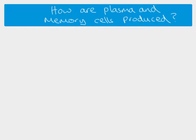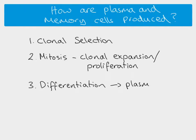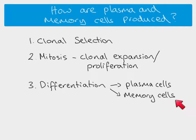In terms of how those cells are produced there are three stages. First we have clonal selection — the selection of a particular B cell. Then that selected cell undergoes mitosis, which we call clonal expansion or proliferation, meaning the selected cell multiplies many times to produce a large number of identical clones. Finally, from that large mass of identical cells we get differentiation, where some become plasma cells and some become memory cells. Memory cells can stay in the body for years and can themselves undergo clonal selection, mitosis, and differentiation again.